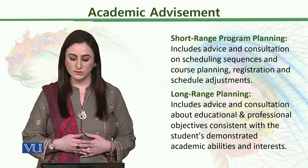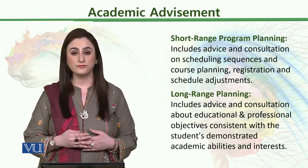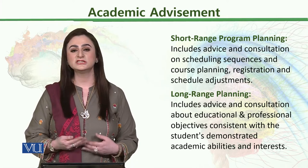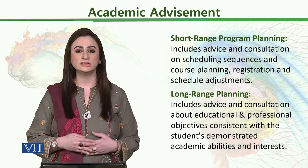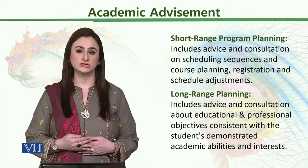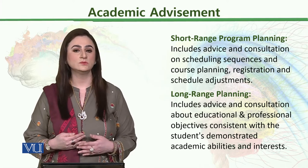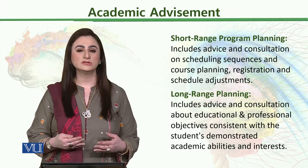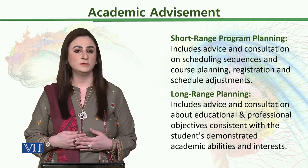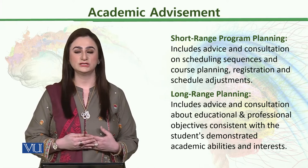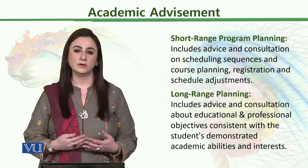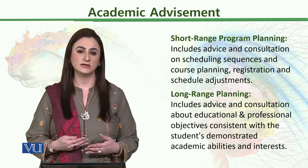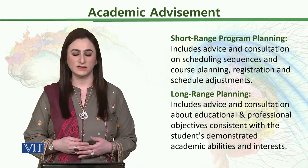Then long-range planning includes advice and consultation about educational and professional objectives, consistent with the student's demonstrated abilities and interests. Whatever specialization the student wants to pursue, you have to see whether their grades in related subjects support that specialization. If a student says they want to do a research degree but their marks in research-related subjects have never been good, then you can suggest another area. Similarly, by looking at their portfolio, suggesting advanced degrees or advanced courses is the work of a good academic advisor.